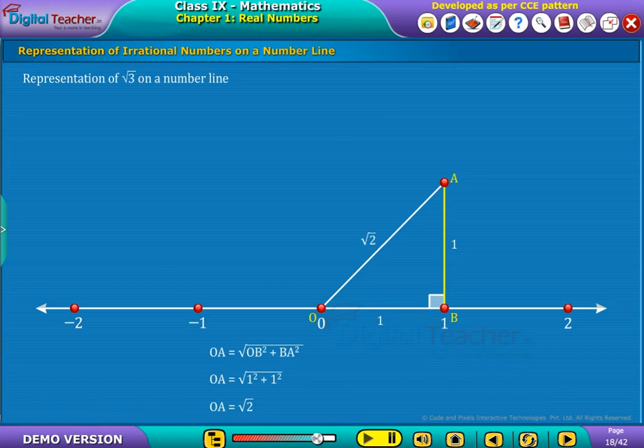Now, draw a perpendicular line to OA of unit length and mark it as D. Now, join OD.